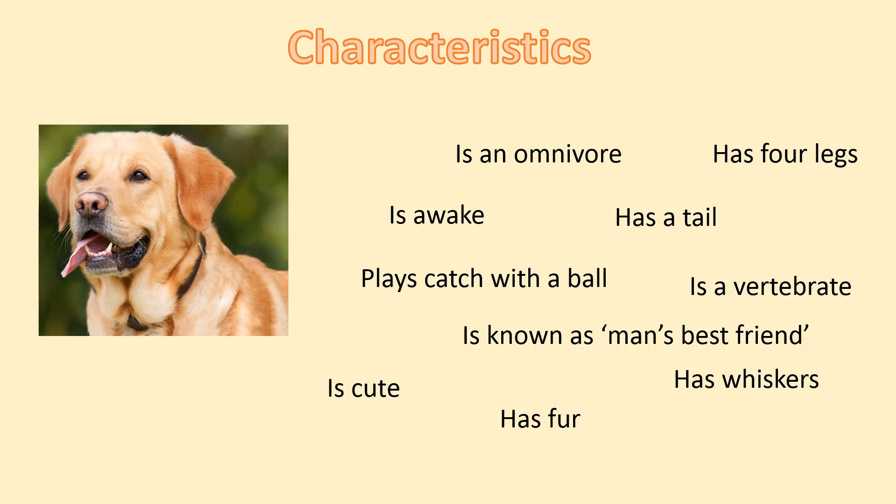I want you to take a look at this dog. We have a few statements over here: Is an omnivore. Has four legs. Is awake. Has a tail. Plays catch with a ball. Is a vertebrate. Is known as man's best friend. Has whiskers. Has fur. Is cute. From all of these statements, which one do you think is a characteristic of a dog?